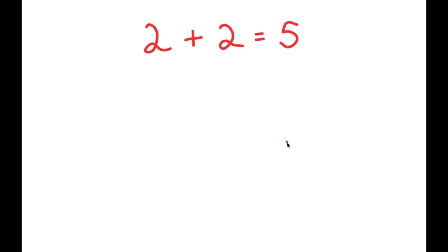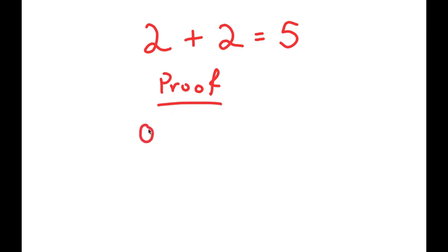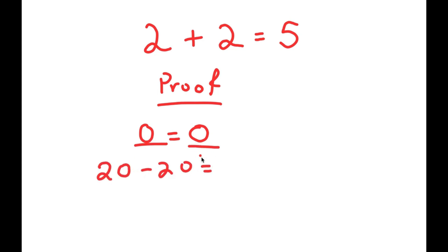In this next part, I'm going to prove that 2 plus 2 is equal to 5. I'll start with the true statement that 0 equals 0, which is obviously true because any number equals itself. I'm going to rewrite the left-hand 0 as 20 minus 20 and the right-hand 0 as 25 minus 25. So I get 20 minus 20 equals 25 minus 25, which is still true.